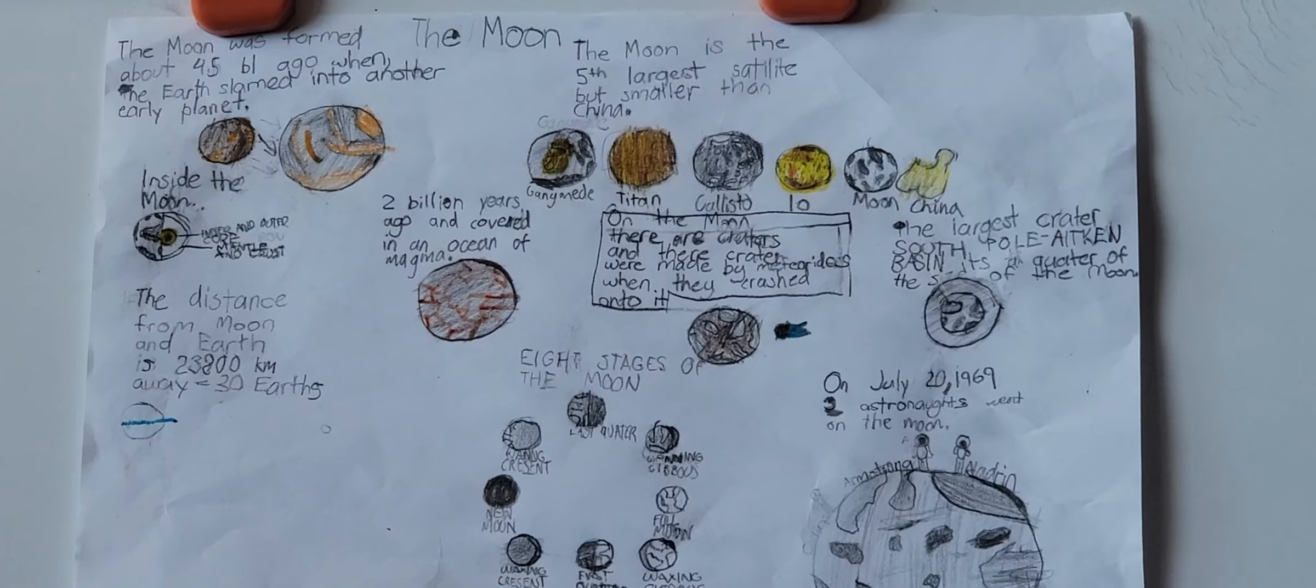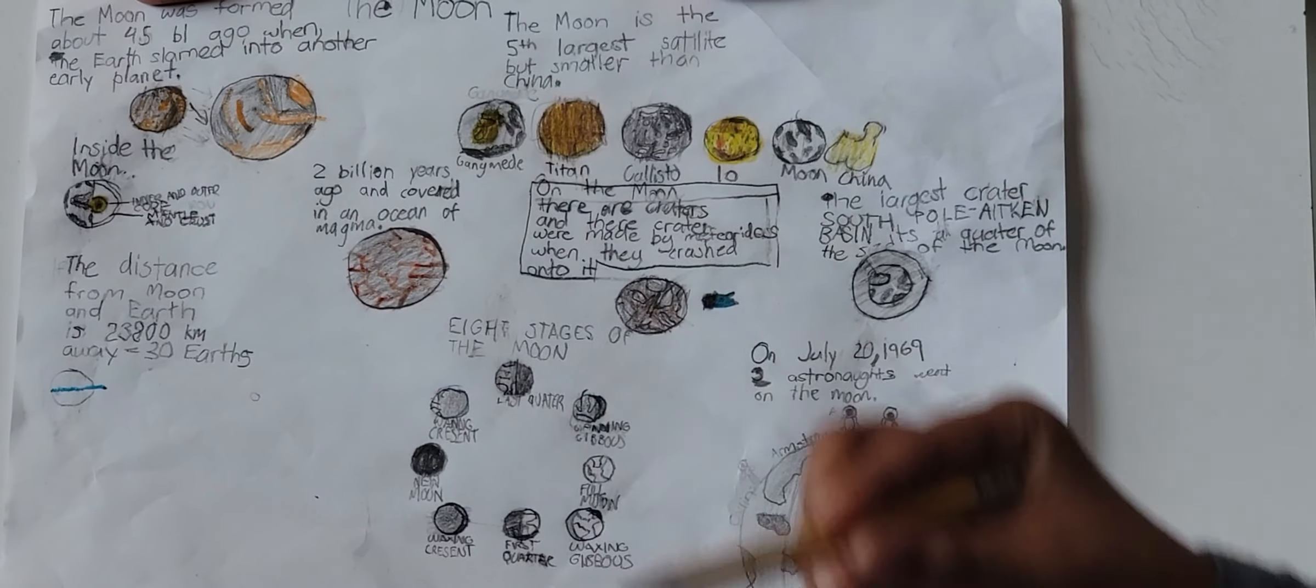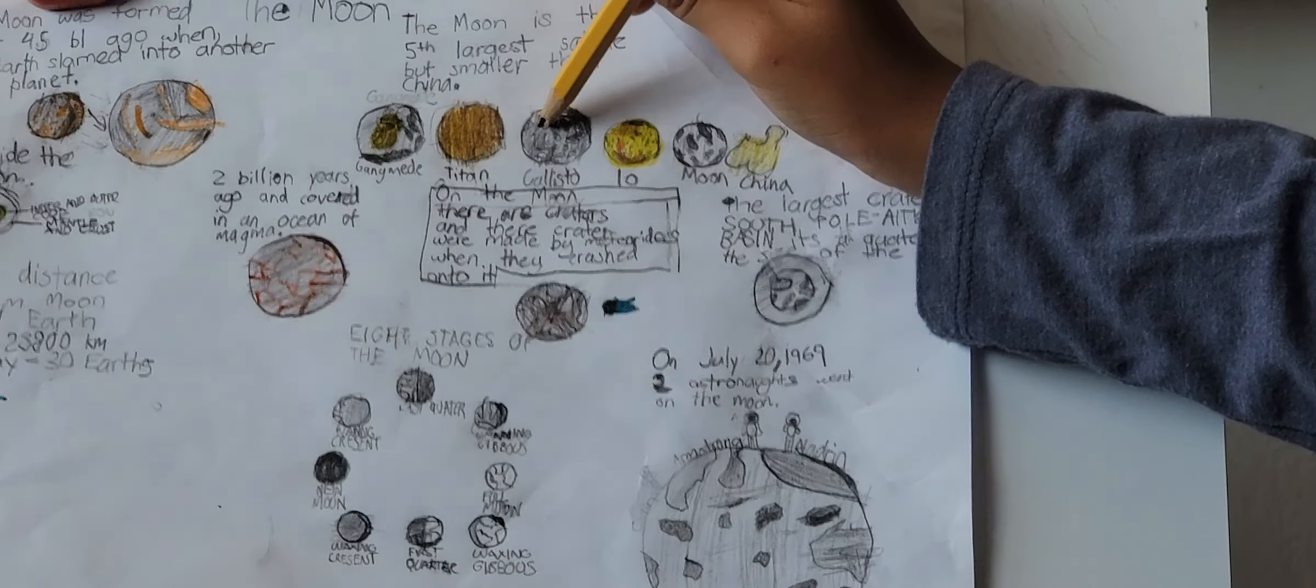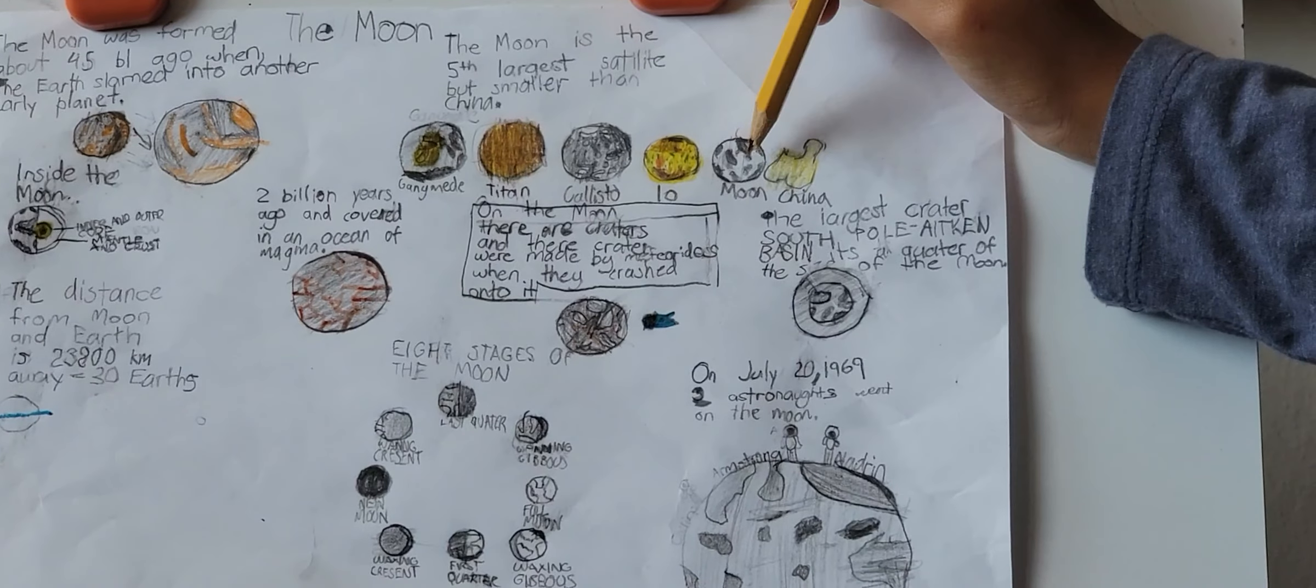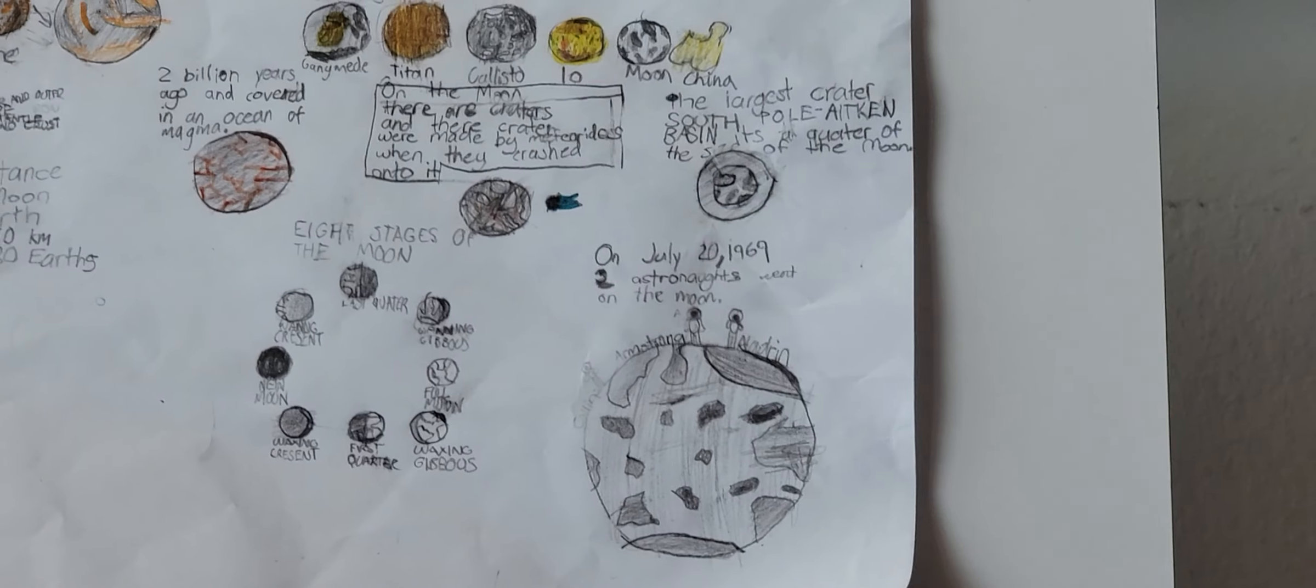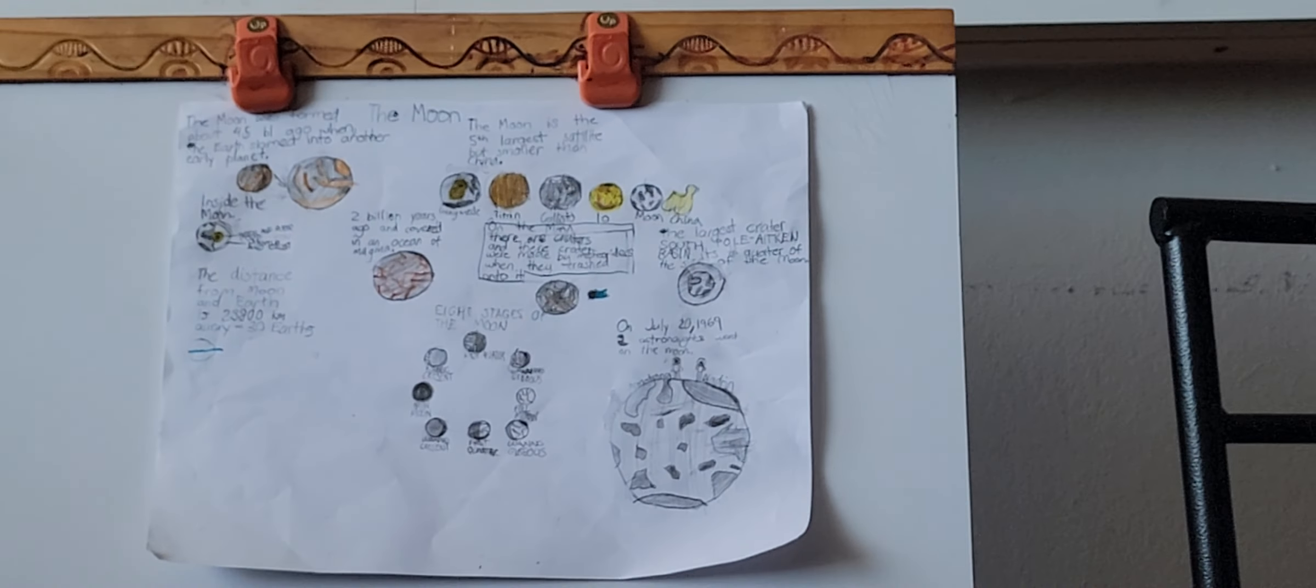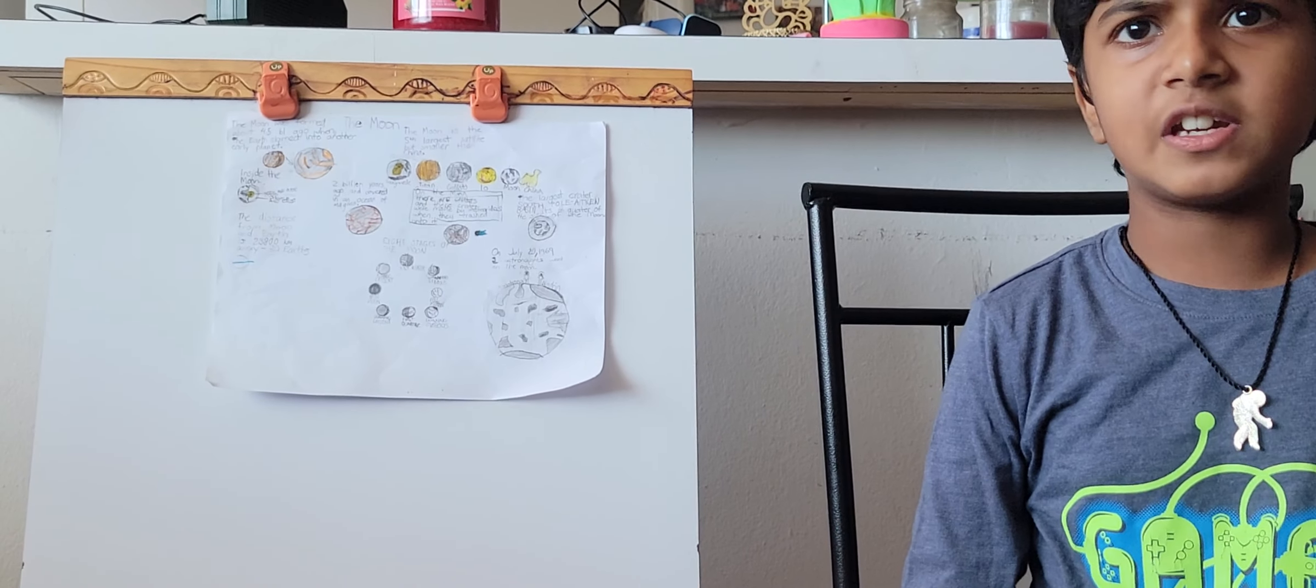So now the moon is the fifth largest satellite but smaller than Titan. The biggest moon is Ganymede, the second biggest is Titan, the third biggest is Callisto, and the fourth biggest is Io, and fifth is the moon. The moon is 2,159 miles, but Titan has 2,193 miles, so Titan has to be bigger than the moon.